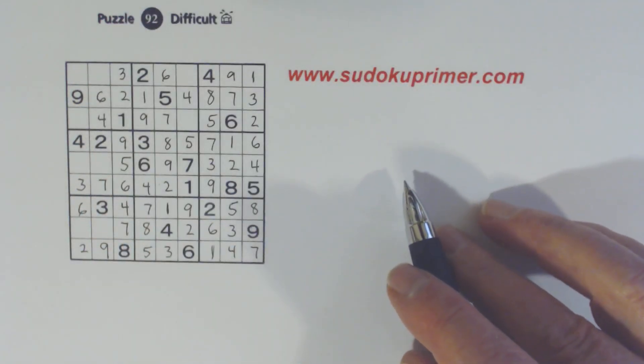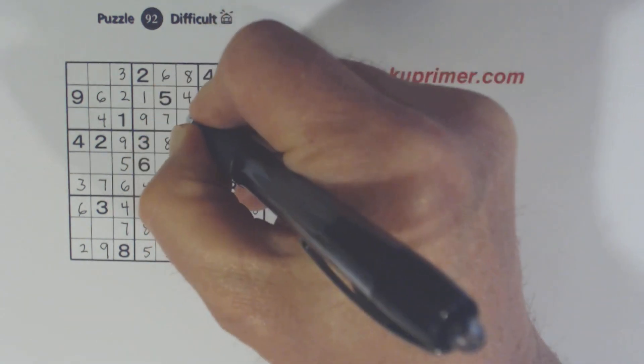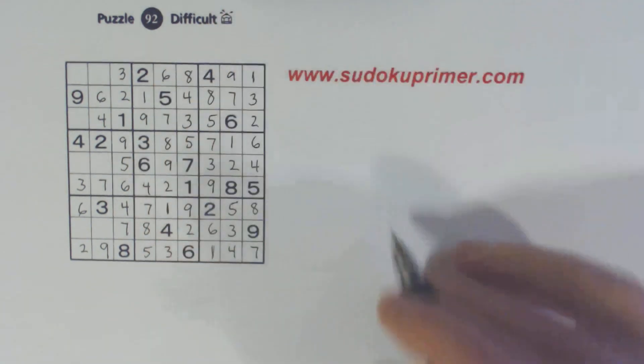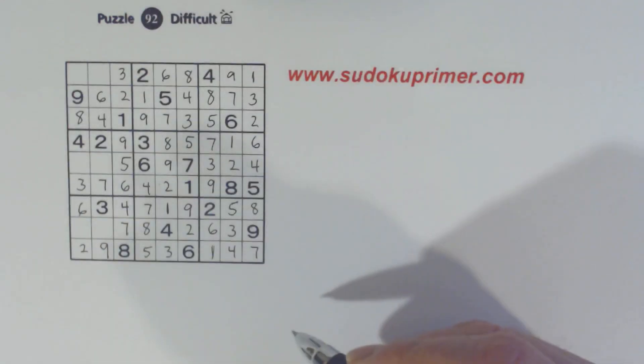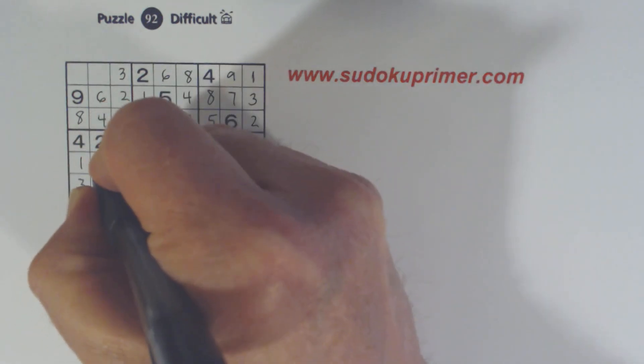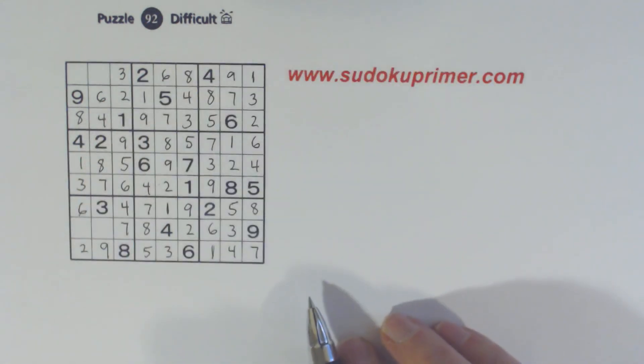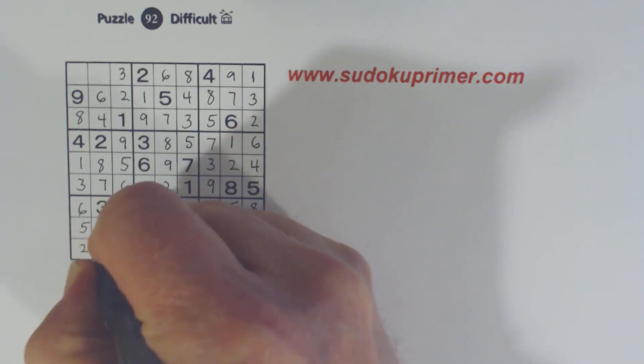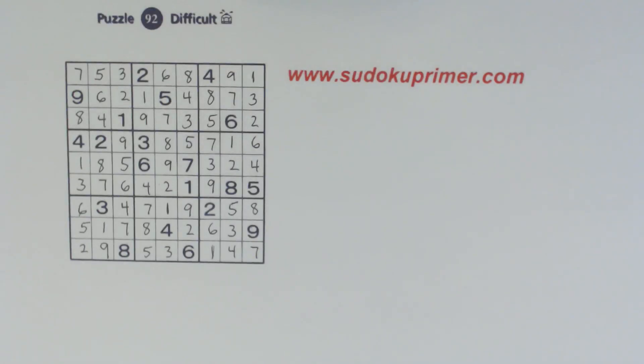We've got a 3 in box 1 — the only number left in that column. That helps us solve the 8 and 3 there. Now we know this is an 8 right there, and so now we know those are 1 and 8. Then we have a 5 and a 1 there, and a 7 and a 5 there. And that's it — that was pretty easy once we saw all those twins.